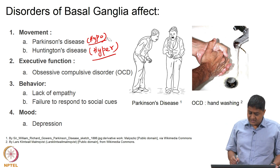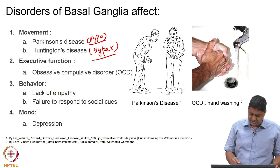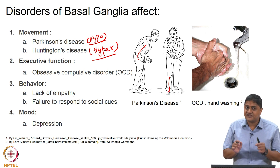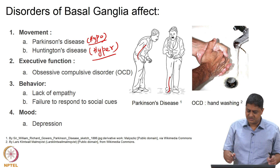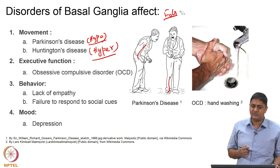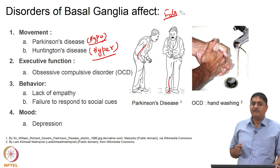The classic signs include, for example, stooped posture and the inability of the person to make the first step. This is also called the FOG episode — the freezing of gait episode — where the patient is not able to make the first step.